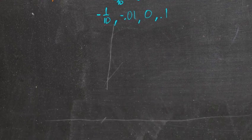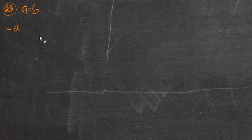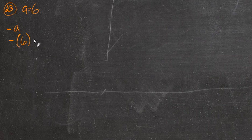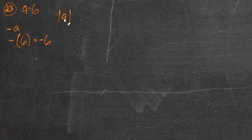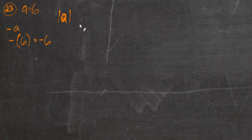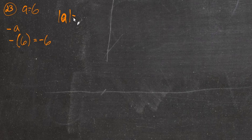Now we'll move on to number 23. Some number a equals 6 and they want us to find negative a, the opposite of a. If we put a negative in front of 6, the opposite of positive 6 is negative 6. These symbols here represent what we want to find: the absolute value of a. That just means how far away is it from 0 on the number line, and it's always a positive representation. The absolute value of 6 — how far from 0 is 6? It's 6 away.